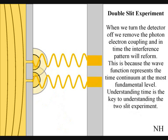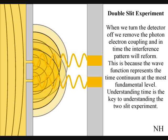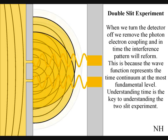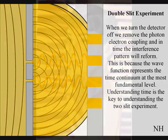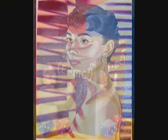If we turn the detector off, we remove the photon-electron coupling, and in time, the interference pattern will reform. Just like in Newton's first law of motion, the interference pattern will continue to maintain its state, unless acted upon by an external force. The symmetry and geometry of time is the key to understanding quantum mechanics.